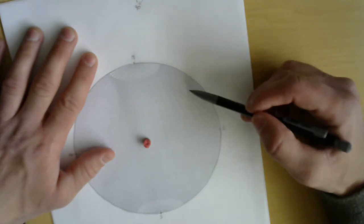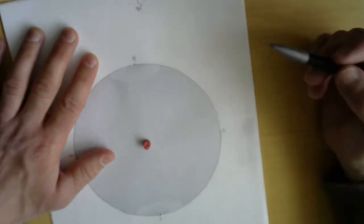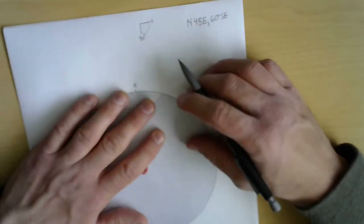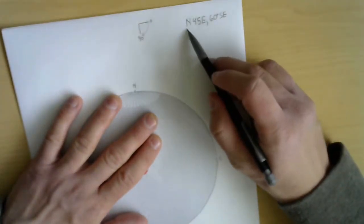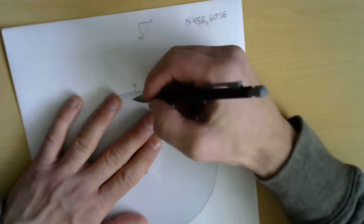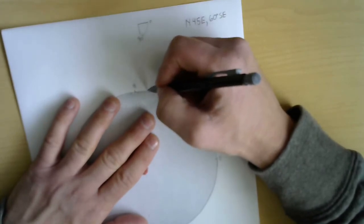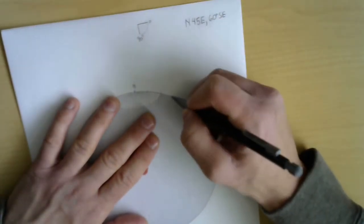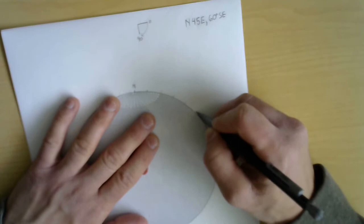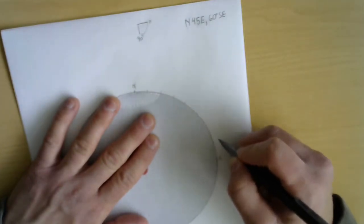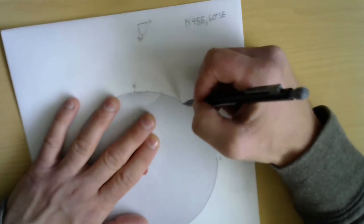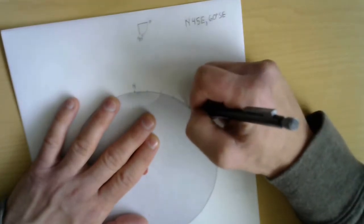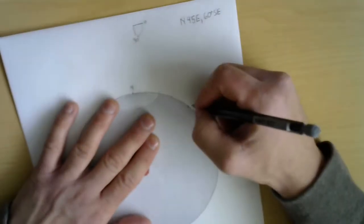To fully complete the notation, it would be north 45 east, 60 southeast. So how do you plot this? This is the primitive circle, and to plot strike you're going to count 45 from north along that primitive circle. This is 10, 20, 30, 40, 50, 60, 70, 80, 90.